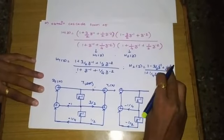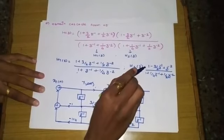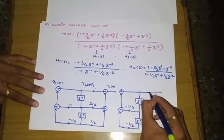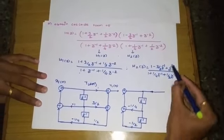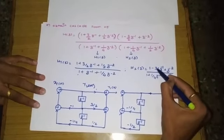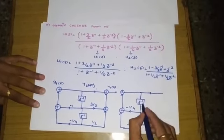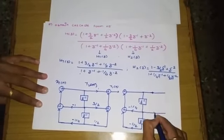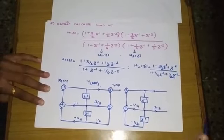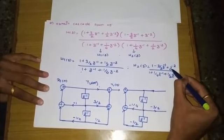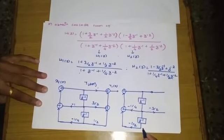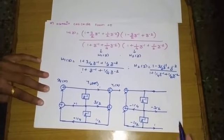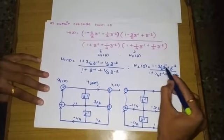For the numerator (all-zero) section of H2(Z): the first coefficient is 1, z⁻¹ is multiplied by −3/2, and z⁻² is multiplied by +1. Two adders are used to combine these feedforward terms.